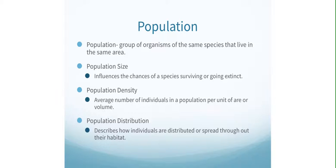There are different patterns of population distribution: there's clumped, there's random, and there's uniform. I am going to talk about all three of those things in class, so please make sure that you have space for all three — clumped, random, and uniform.